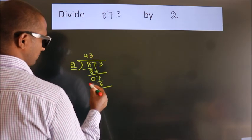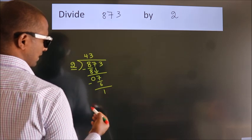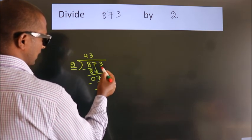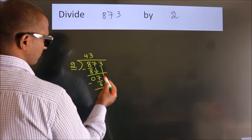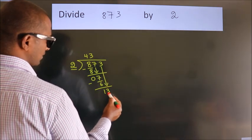Now we subtract, we get 1. After this, bring down the beside number. So 3 down, so 13.